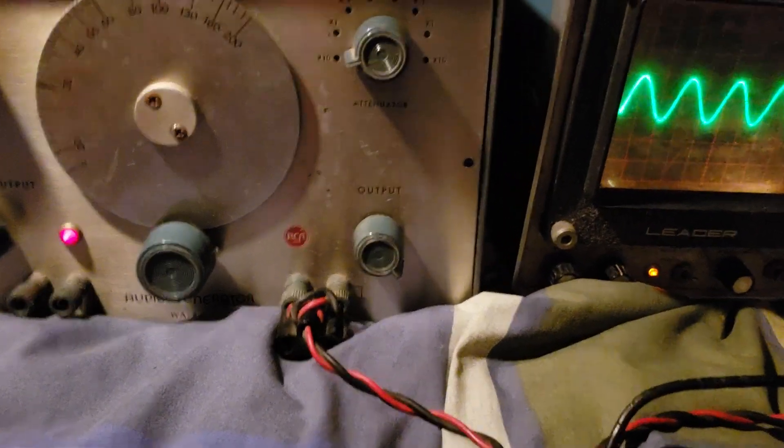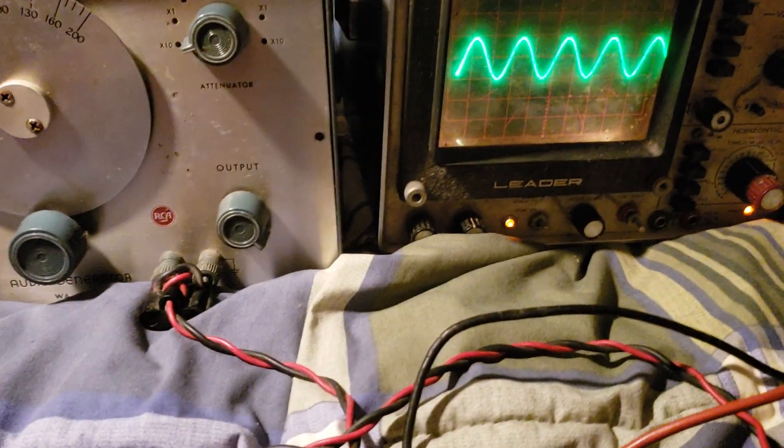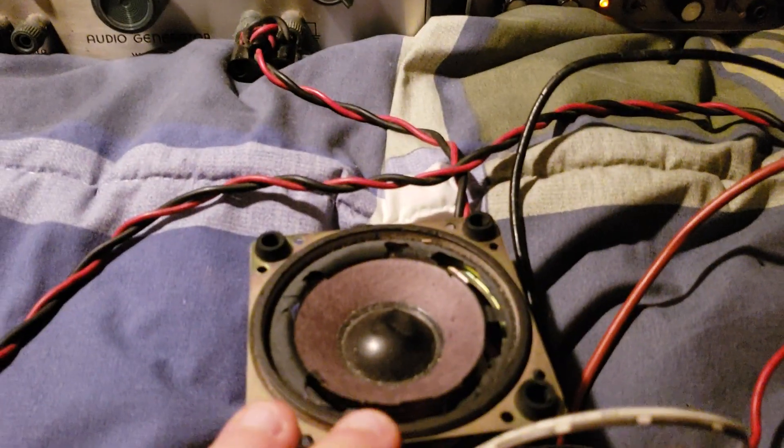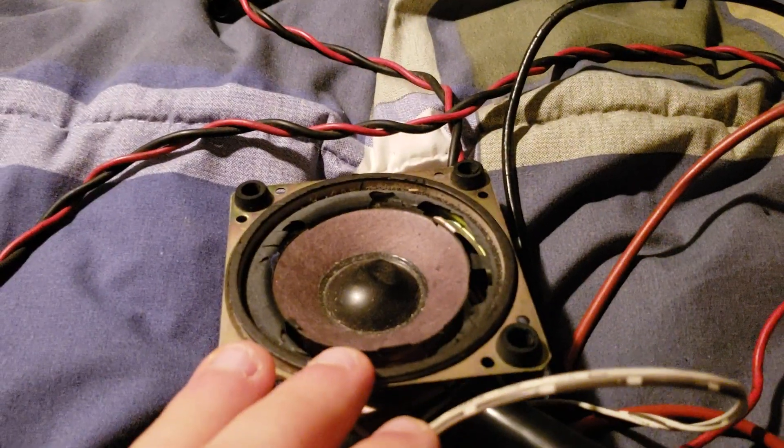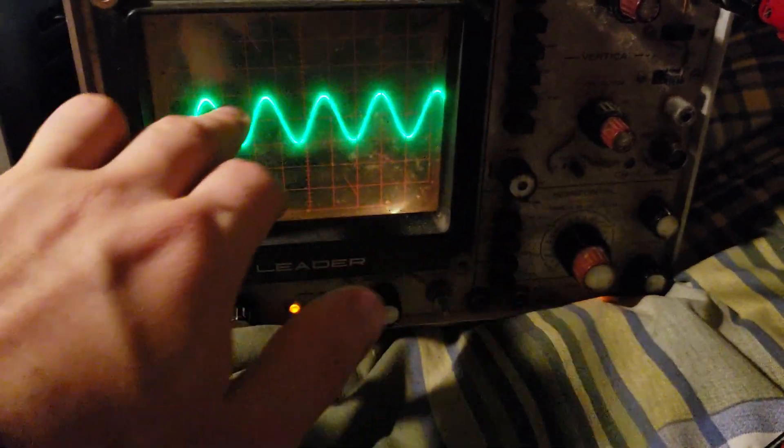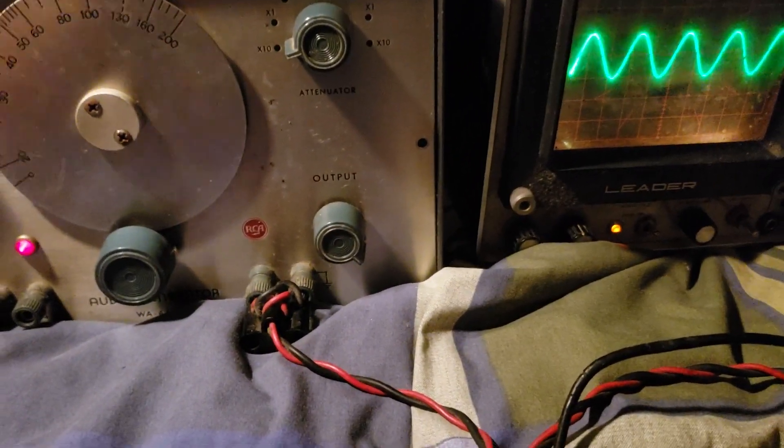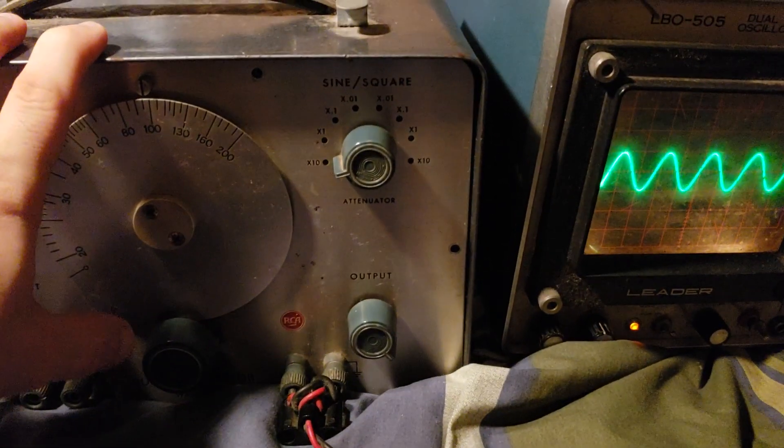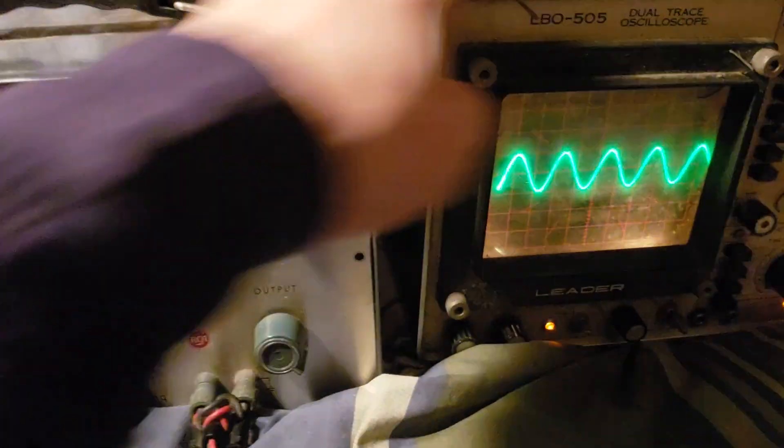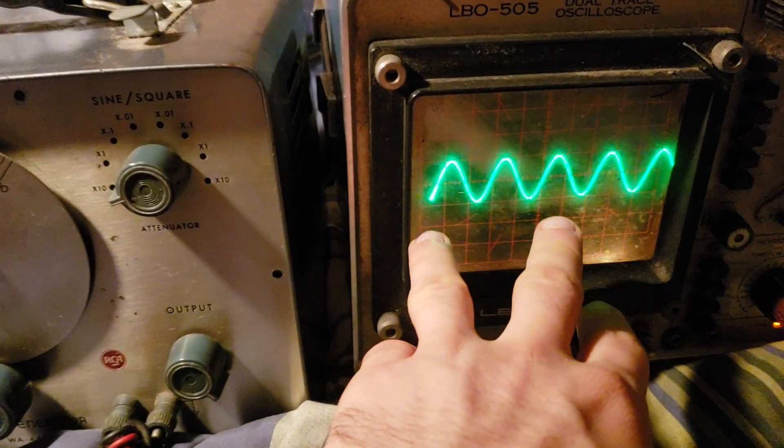Basically what's happening is the signal that this is putting out to not only the speaker and the oscilloscope can be used and interpreted different ways. The speaker is taking that signal and turning it into sound. The oscilloscope is turning it into a visual sine wave. If we had a piece of equipment hooked up in between the oscilloscope and the audio generator, like right about where our speaker was, it would actually change what we're seeing here.